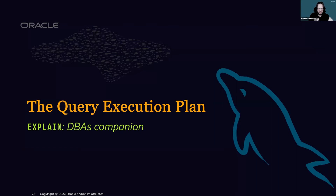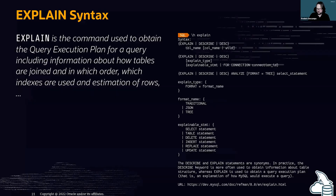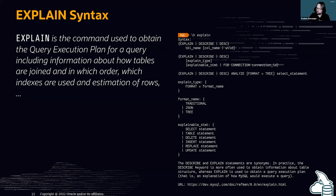Now we know what the optimizer does: it finds the best query execution plan. As MySQL DBAs, we can also check and EXPLAIN it. EXPLAIN is our best companion — it's the command we use to obtain the query execution plan for a query, including information about how tables are joined, which order, which indexes are used, and the optimizer's cost estimations.